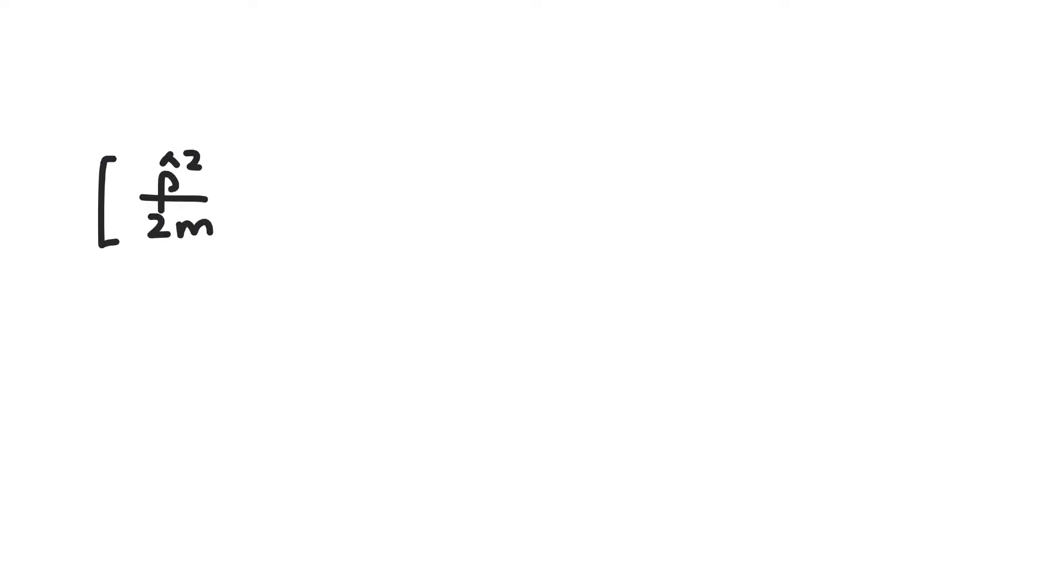Last time, we arrived at a Schrödinger equation for a harmonic oscillator that looks like this. This time, we take the first step to solving it, which is introducing dimensionless variables.